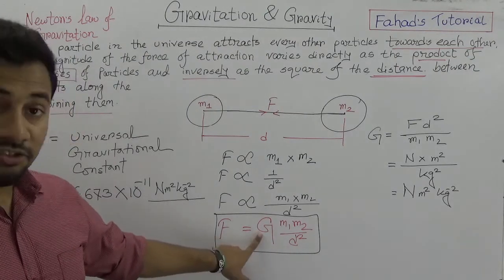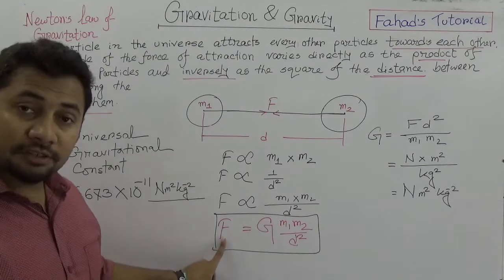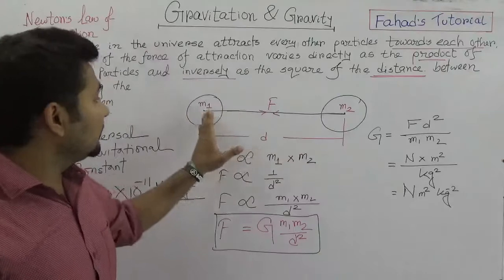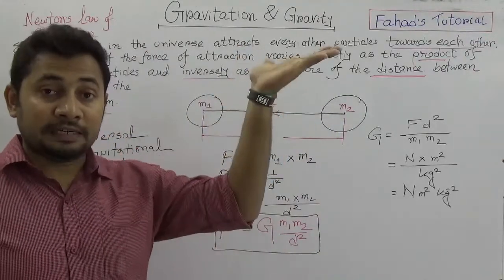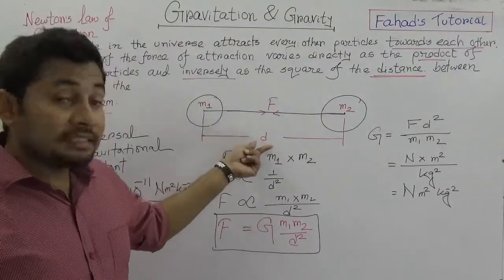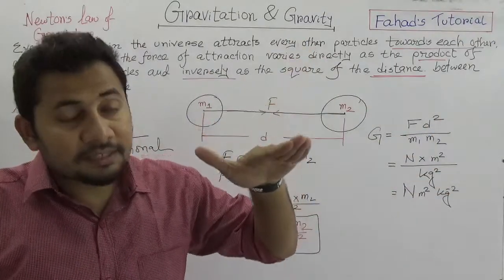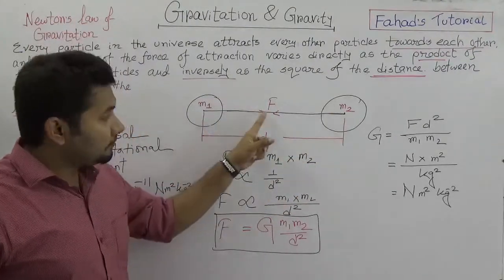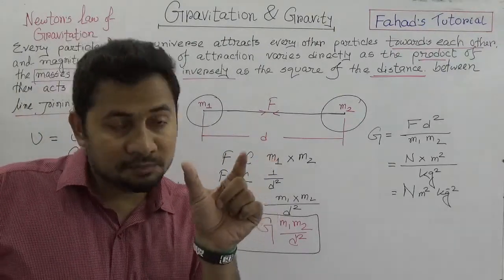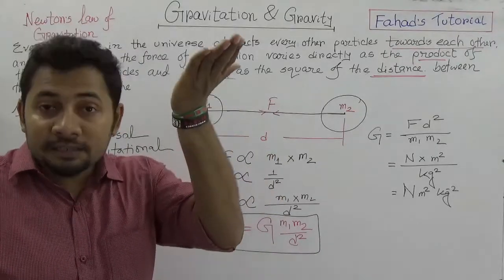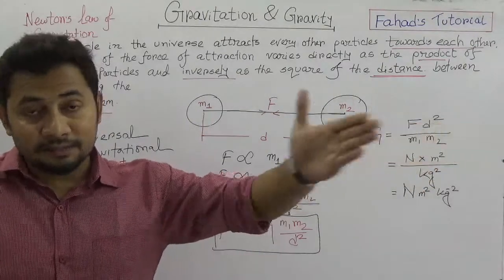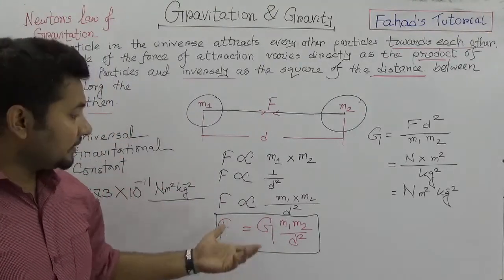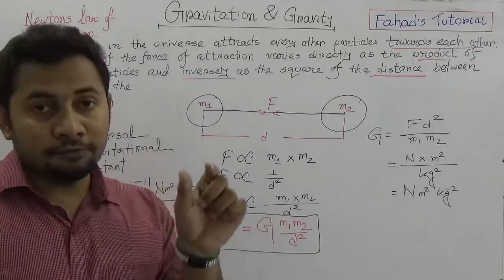We know that gravitational constant G has a specific value, and the force is totally dependent on two different things: mass and distance. If the mass of the object increases, the force will automatically increase because it is directly proportionate. But if the distance increases, the force will decrease because distance and force are inversely proportionate. It means if D becomes smaller, the magnitude of F would be bigger; and if D is getting bigger, the force will be smaller.